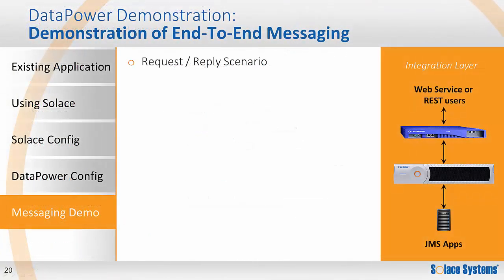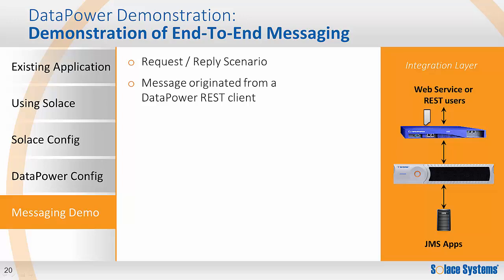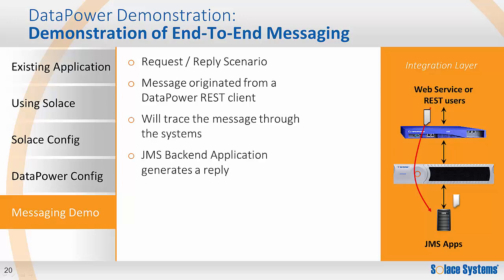Now it's time to send a request and get a reply through the system to prove that end-to-end messaging works. I'll use an HTTP client to send an HTTP post to the Datapower appliance. We can then follow this message through the Datapower and Solus appliances until it reaches the JMS backend application. The application will process the message and generate a reply, which we'll trace back through the system to the original HTTP client.